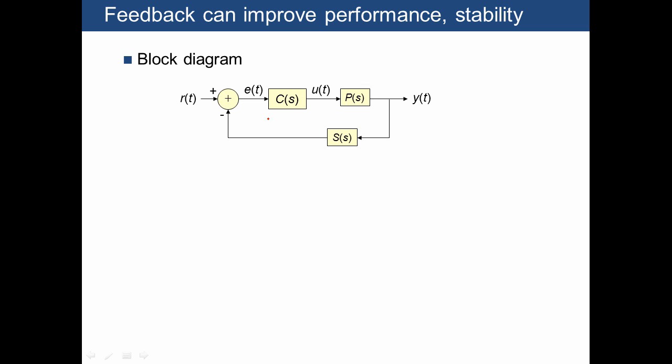Here's a block diagram of a typical feedback control system, and we're going to use it to explain how feedback can improve the performance and stability of a system. Let's introduce the different parts. First of all, we have signals and systems, one of the signals being the output of the system, and that's being produced by the plant, which is a generic term for the system that's being controlled.